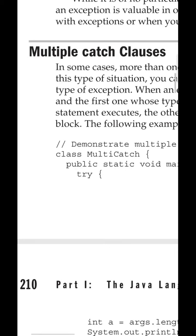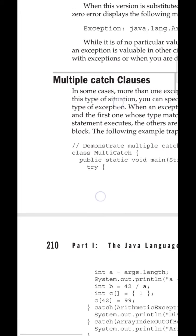Let's continue our discussion on exception handling. The next topic is multiple catch clauses, covered at page numbers 209 and 210. A single try block is sufficient to monitor all possible types of exceptions, whereas a separate catch block is required for each and every type of exception to take the necessary action.